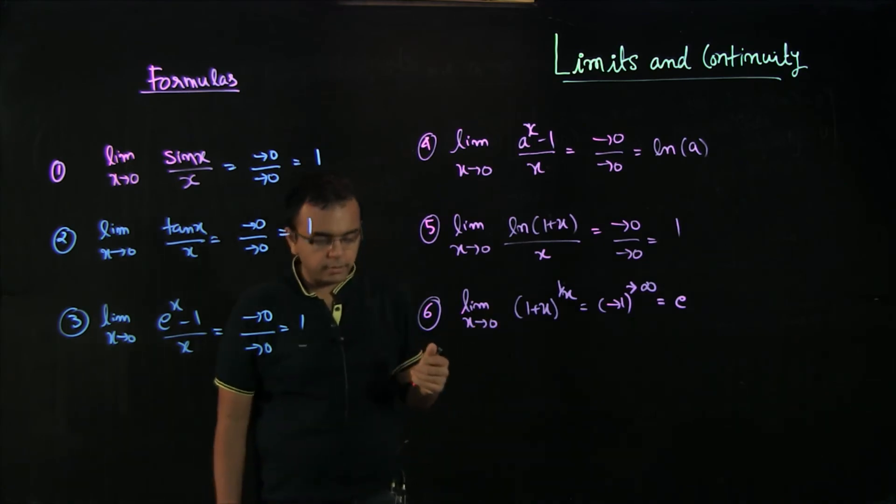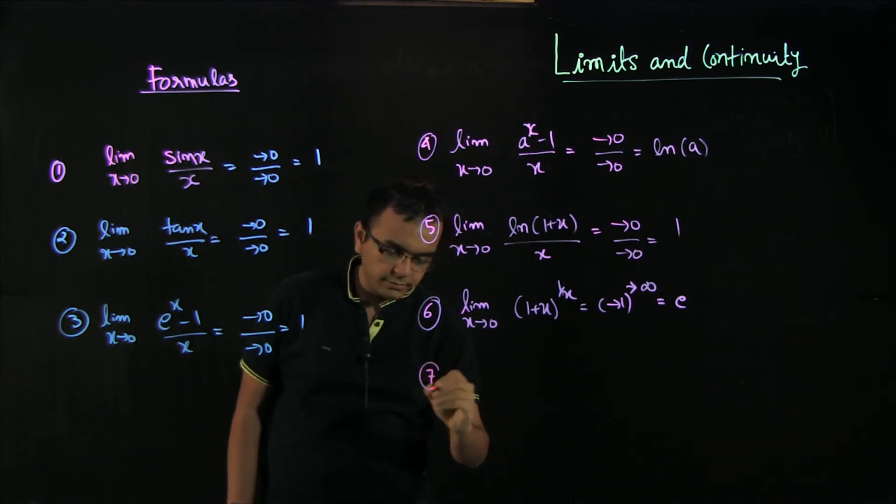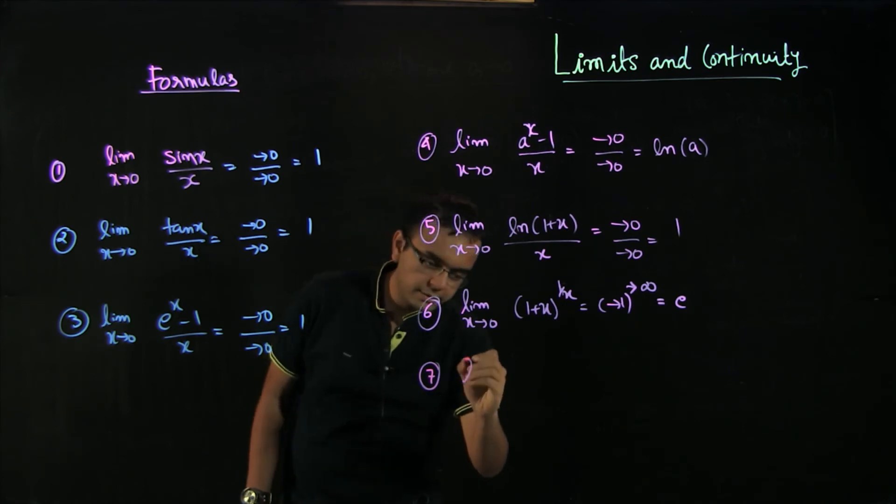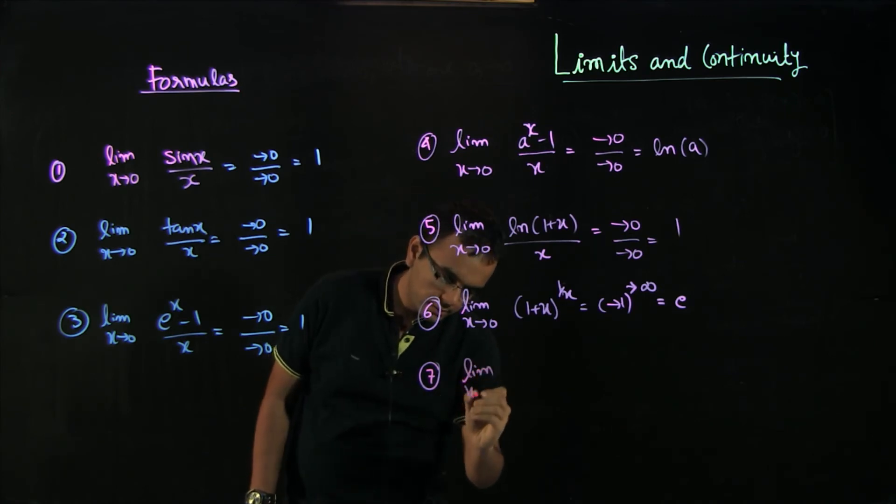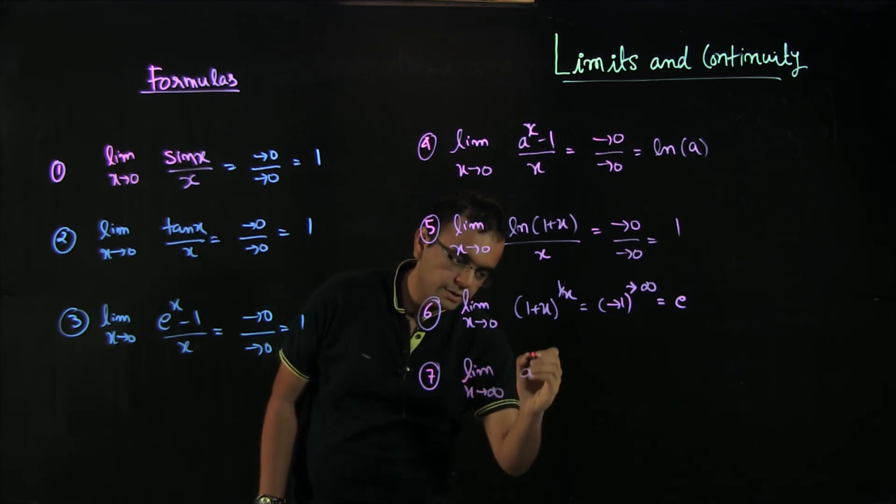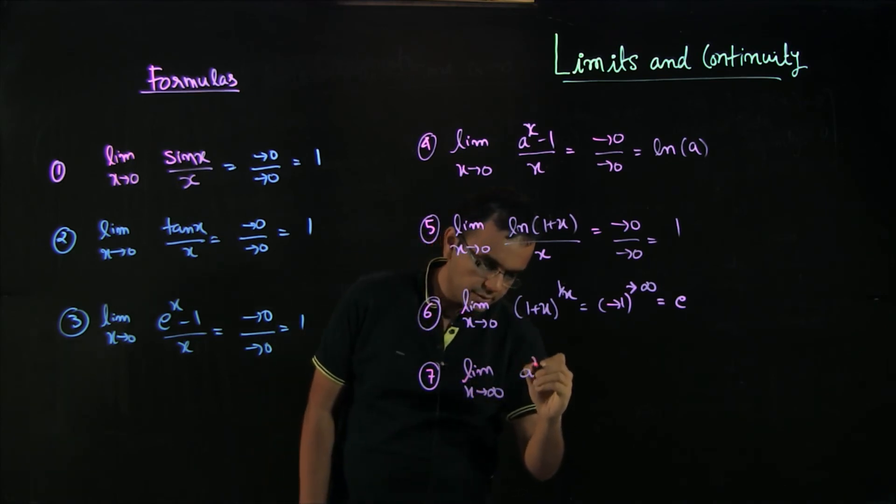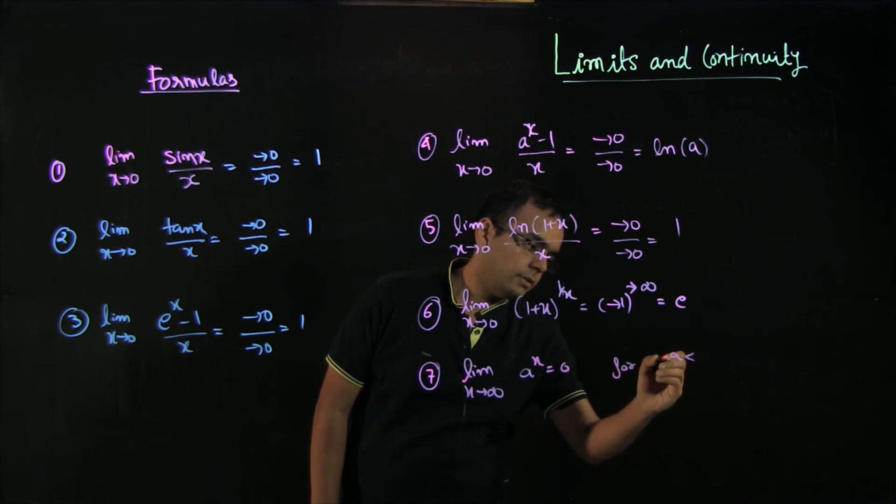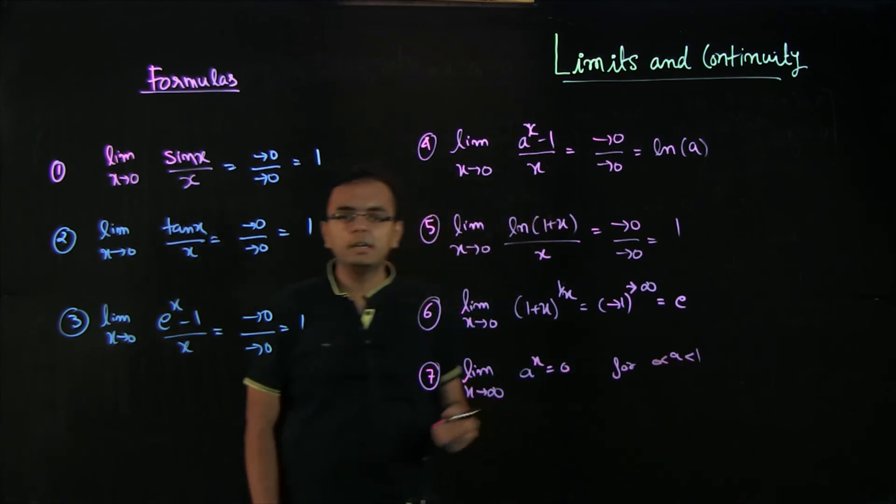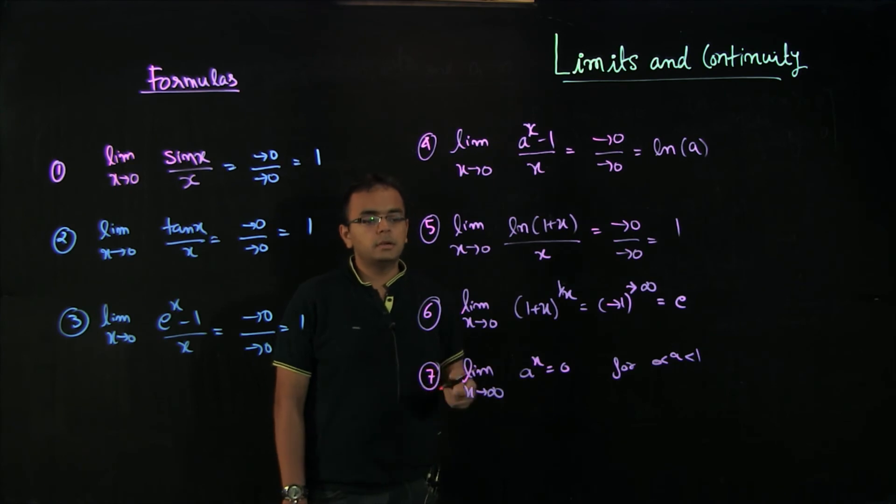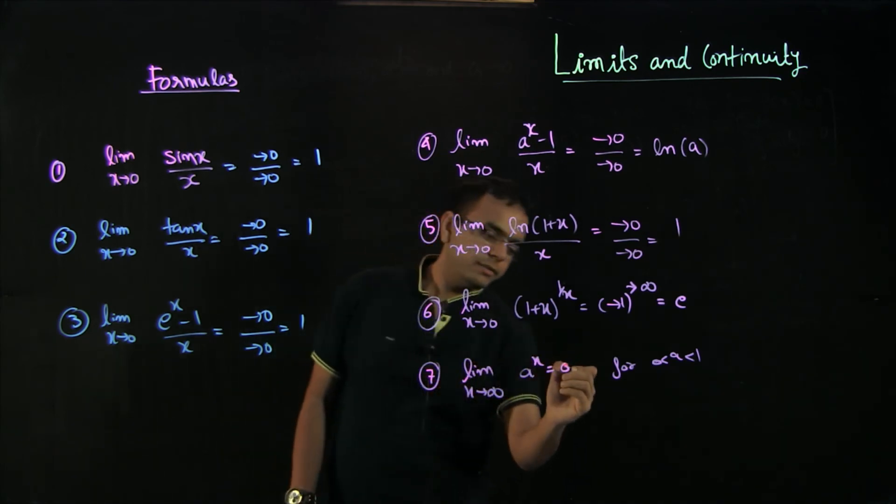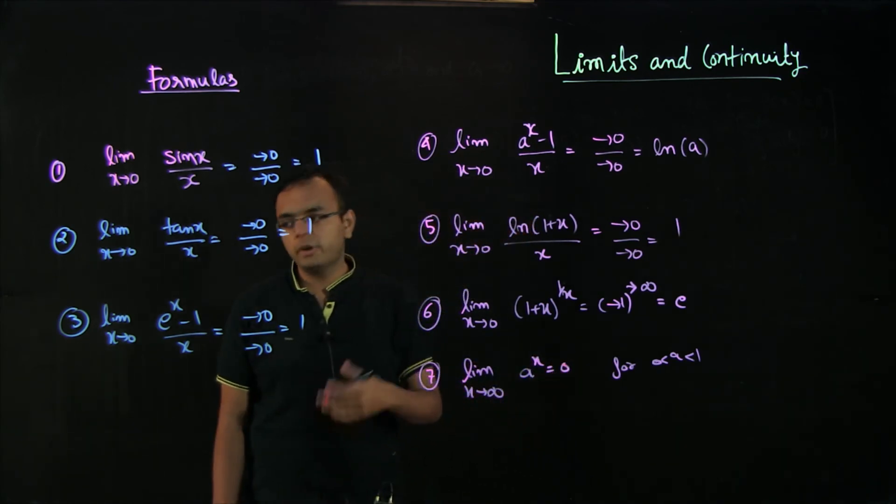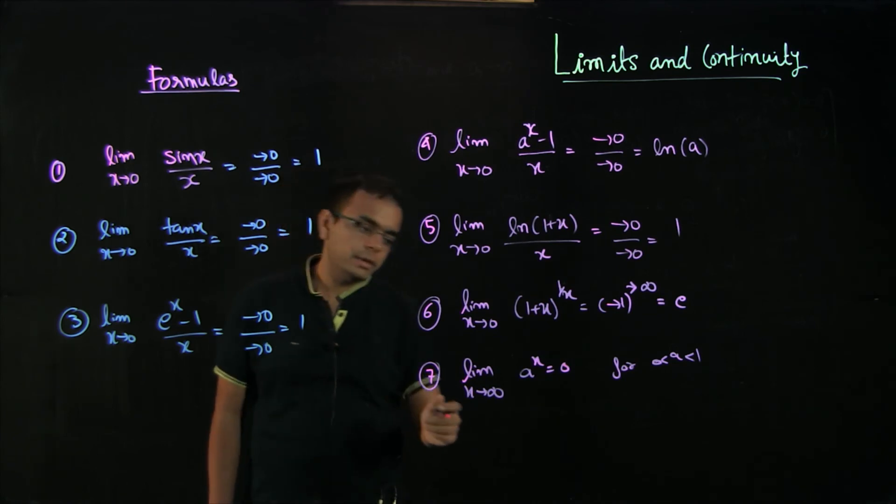Let us take the last formula, and that is limit x tends to infinity of a raised to the power of x equals 0 for a between 0 to 1. This is not an indeterminate form. I just wanted to talk about this - if something is less than 1 and you have something approaching infinity, then you will go to 0. For example, if a is 0.5, then 0.5 raised to the power of infinity is 0.